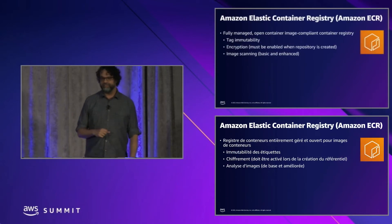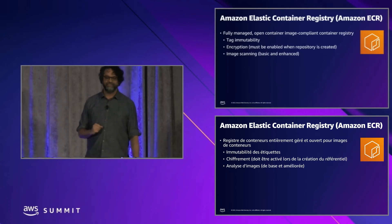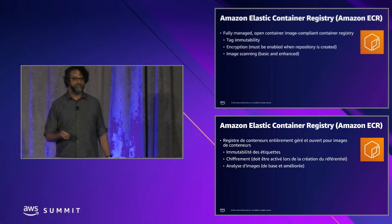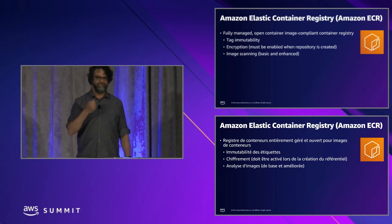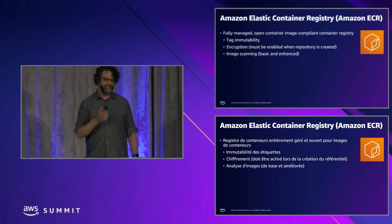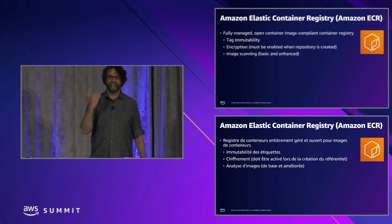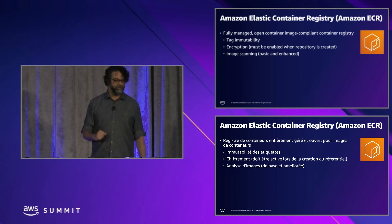You want a good registry. Amazon has Elastic Container Registry — a fully managed, open container image-compliant container registry. It supports tag immutability, meaning you can set up the registry so that if you try to push a container with the same Git SHA tag that already exists, ECR will stop you. That's a good way to ensure you're not overriding and not changing the determinism of your container builds. It also supports encryption — your ECR registries and container images are encrypted behind the scenes.